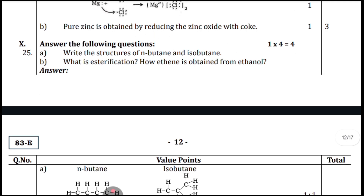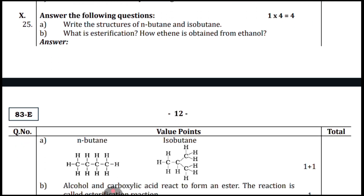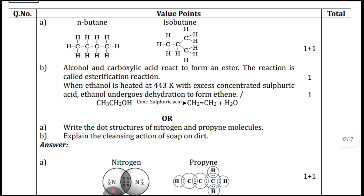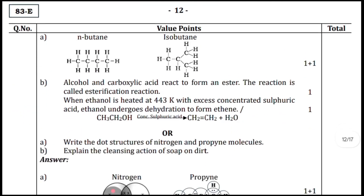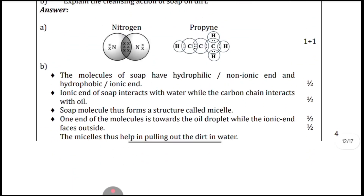Question twenty-five for four marks: draw the structure of n-butane and isobutane. What is esterification and how is ethylene obtained from ethanol? Write the equation for esterification and how ethylene is formed from ethanol. Also: draw the structure of nitrogen and protein molecules and explain the cleansing action of soap on dirt.